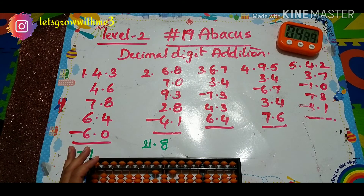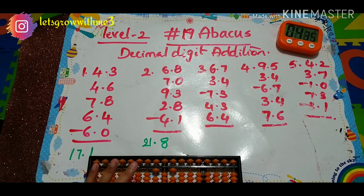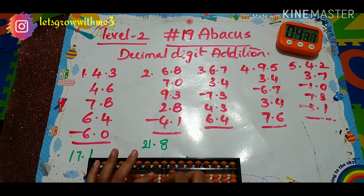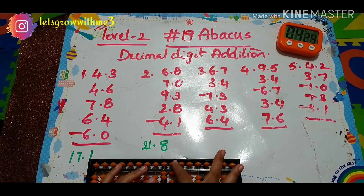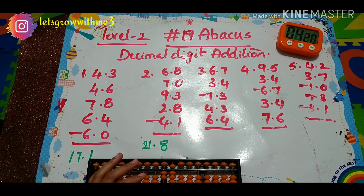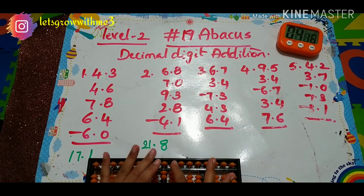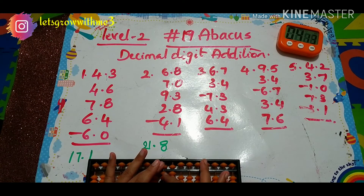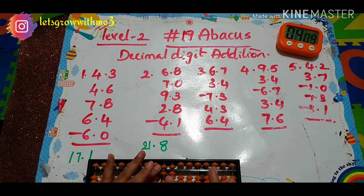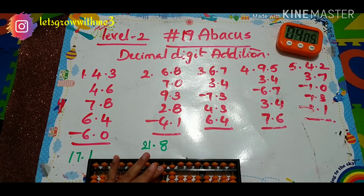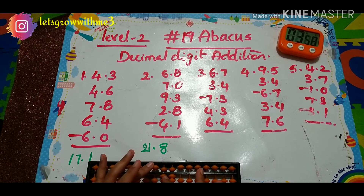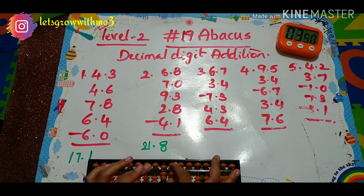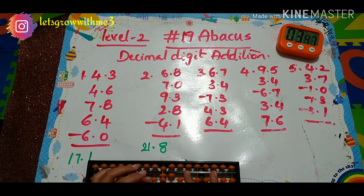Next minus 7.3 — so how to do minus 7: minus 10 plus 3. Next plus 4.3 — how to do that: minus 10 plus 7. Next plus 4.3 — how to add 4: plus 5 minus 1. Then how to add 3: plus 10 minus 7.